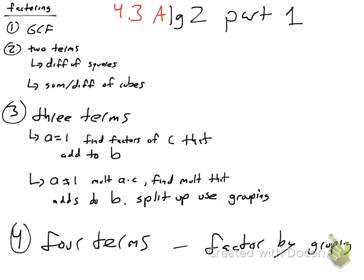If a does not equal 1, like it says here, now we're going to multiply a times c, first term times last term, the coefficients. And then we're going to find the multiples or the factors of that that adds up to b, so we can split it up and factor by grouping. Again, I'm going to go over these in a little bit more detail when we get to them. And if you have four terms, then you're going to do the factor by grouping.